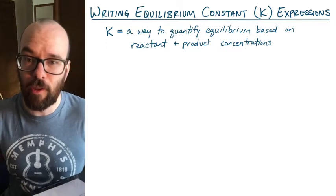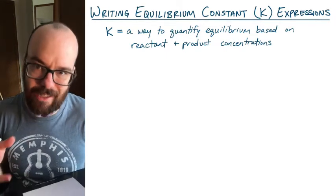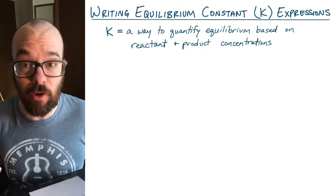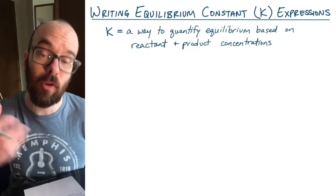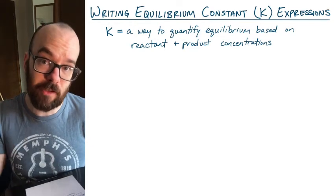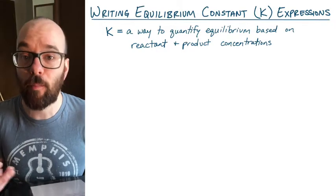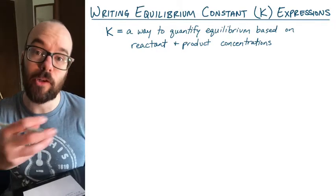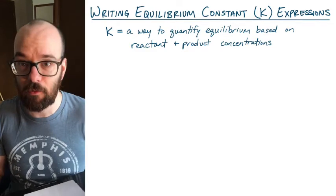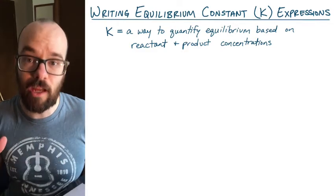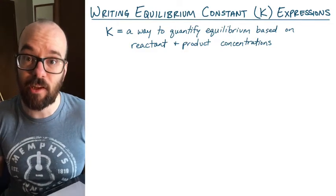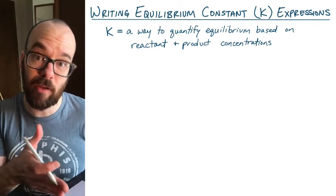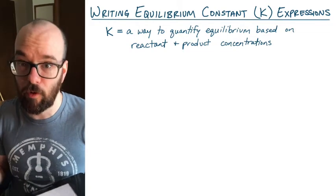At equilibrium there is not an equal amount of products and reactants. What is true is that the forward rate — the rate at which reactants convert to products — is equal to the reverse rate, or the rate at which products convert back into reactants. So all this K-value is doing is telling us where that equilibrium is located: is it favoring more products, or more reactants?